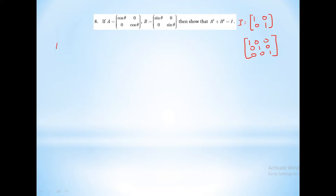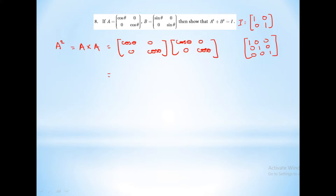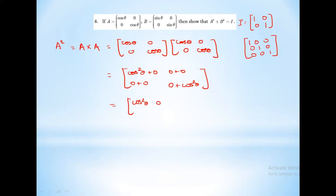Now first we are going to find A squared. A squared equals A into A, which is cos θ, 0, 0, cos θ multiplied by cos θ, 0, 0, cos θ, which equals cos²θ, 0, 0, cos²θ.